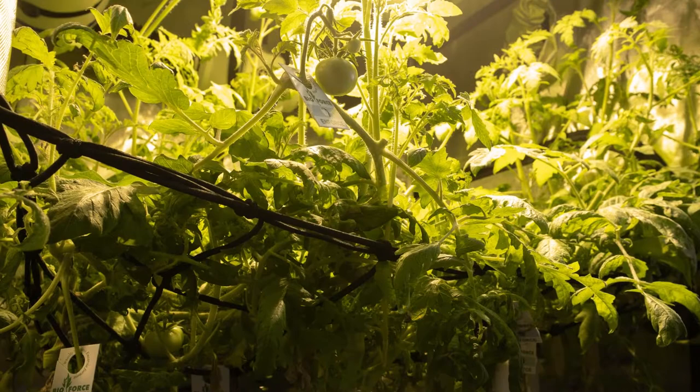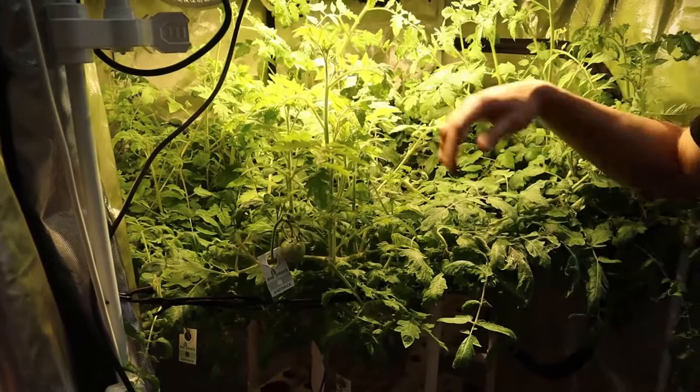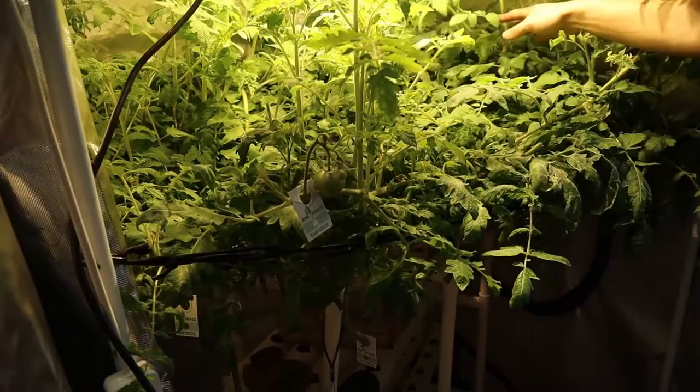Cutting over to our one by one tent here. You almost can't even see the trellis net, it has gone absolutely wild here with these tomatoes but it is still offering a lot of support. We've been pretty rough on these tomatoes, snapping the branches over and feeding them back through the trellis net. This was essentially a sea of green or a scrog style setup and then things have just taken off.